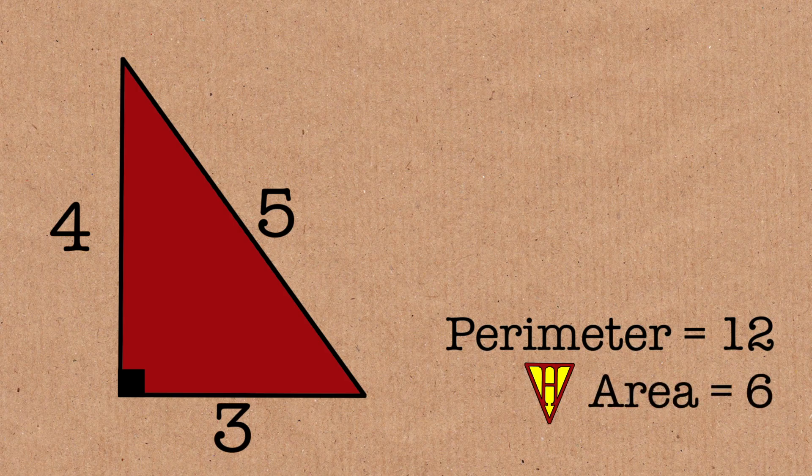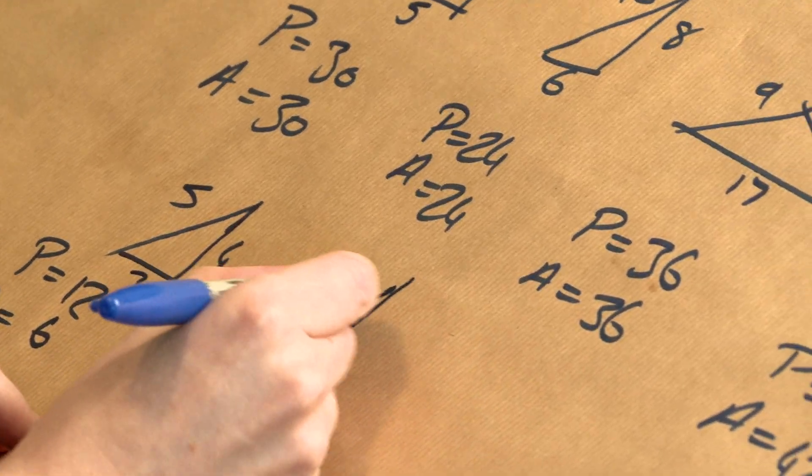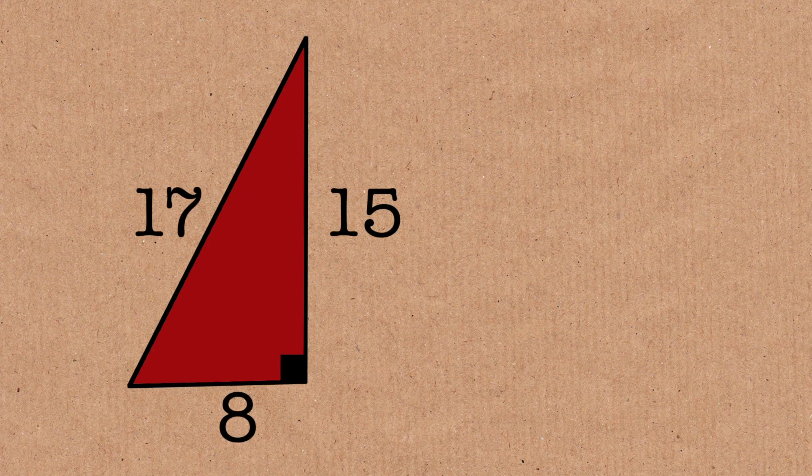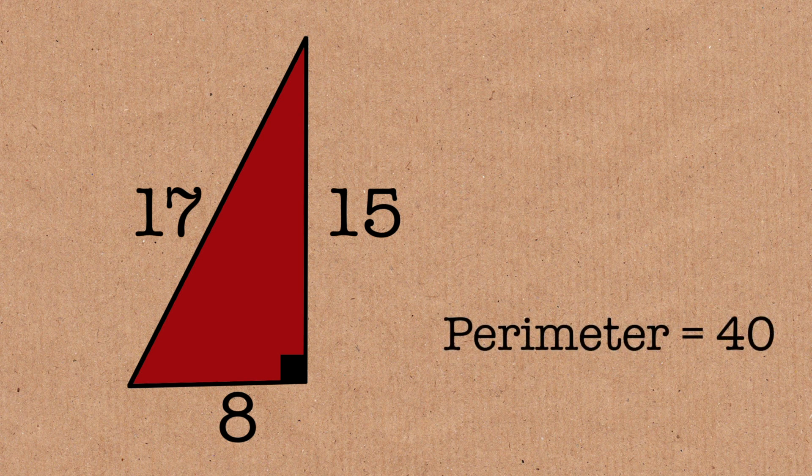So you can do this, but any Pythagorean triangle would work. As another example, 17, 15, 8 would work as well. So it's got an integer perimeter, which I think is 40, and the area is an integer as well, 60.